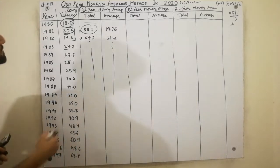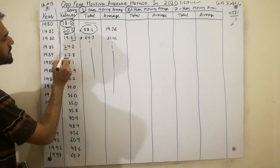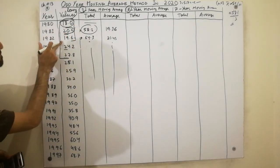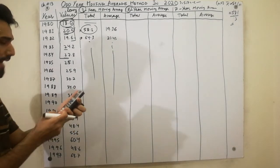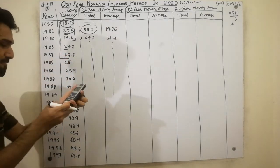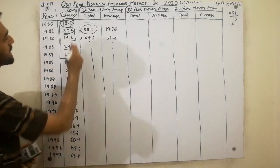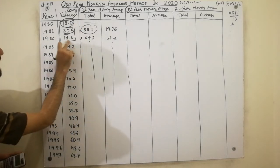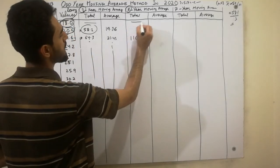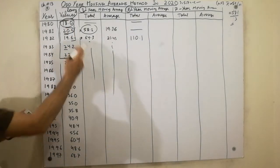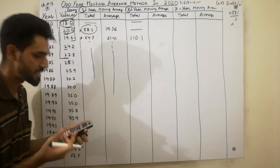Now moving to the 5-period moving average. 5 shows we will add up 5 values — 1, 2, 3, 4, 5. We add up 5 values: 18.0 plus 20.5 plus 19.6 plus 24.2 plus 27.8. We get 110.1. Must remember the center: with 5 values there are 2 values on each side, and the center is the third. So we write 110.1 in the center. That center value is 110.1. The two edge rows will be blank.